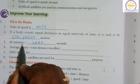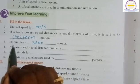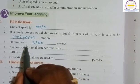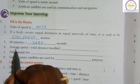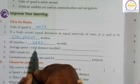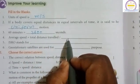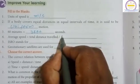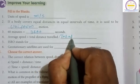Average speed is equal to total distance traveled divided by total time taken to travel.